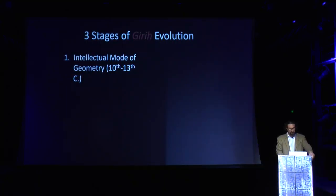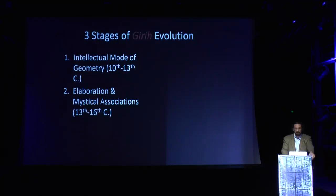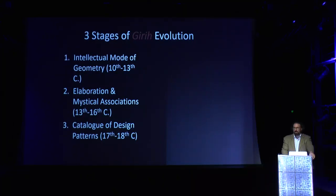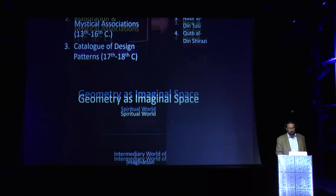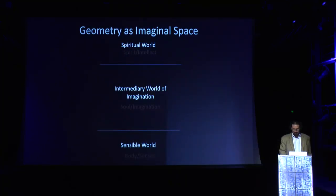The pattern's evolution has stages: from the 10th to 13th century it was characterized by an intellectual mode of geometry; from the 13th to 16th century it came under the influence of elaborate mystical associations; and by the 17th–18th century many patterns became a catalogue for design imitation. It is under the influence of people like Ibn Arabi, Suhrawardi, Nasir al-Din al-Tusi, and Qutb al-Din al-Shirazi — who all share an elaborate theory of the imagination — that geometry gained its fullest mystical articulation.